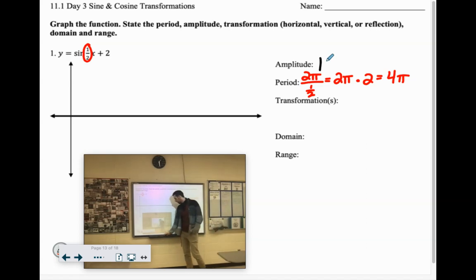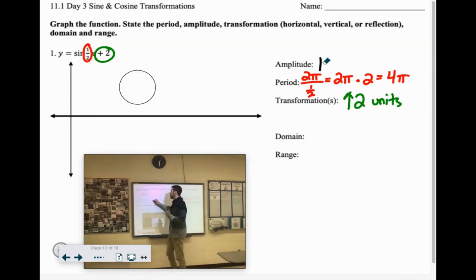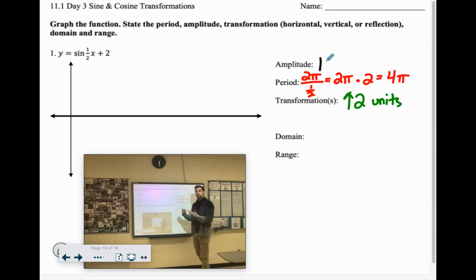Let's talk about transformations. The only one I see is this plus two at the back, so that is a vertical shift up two units. Now when I'm figuring out how to space out my graph, I like to find my steps. So I find one cycle and divide it by four, so four pi divided by four would be one pi.